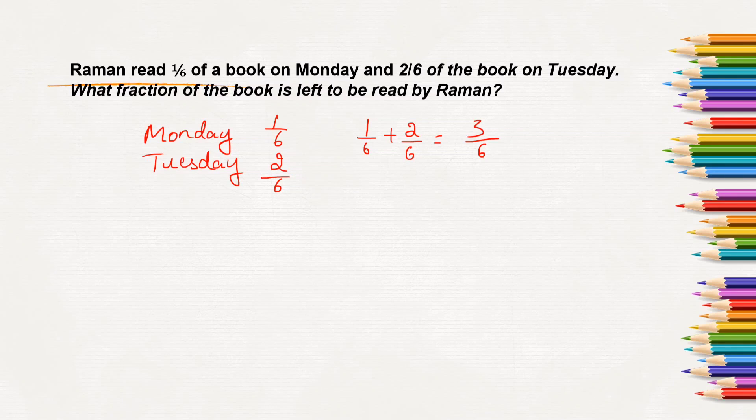Now we have to subtract this from one whole book to find out what fraction is left to be read. So one whole minus 3 by 6 which has already read.